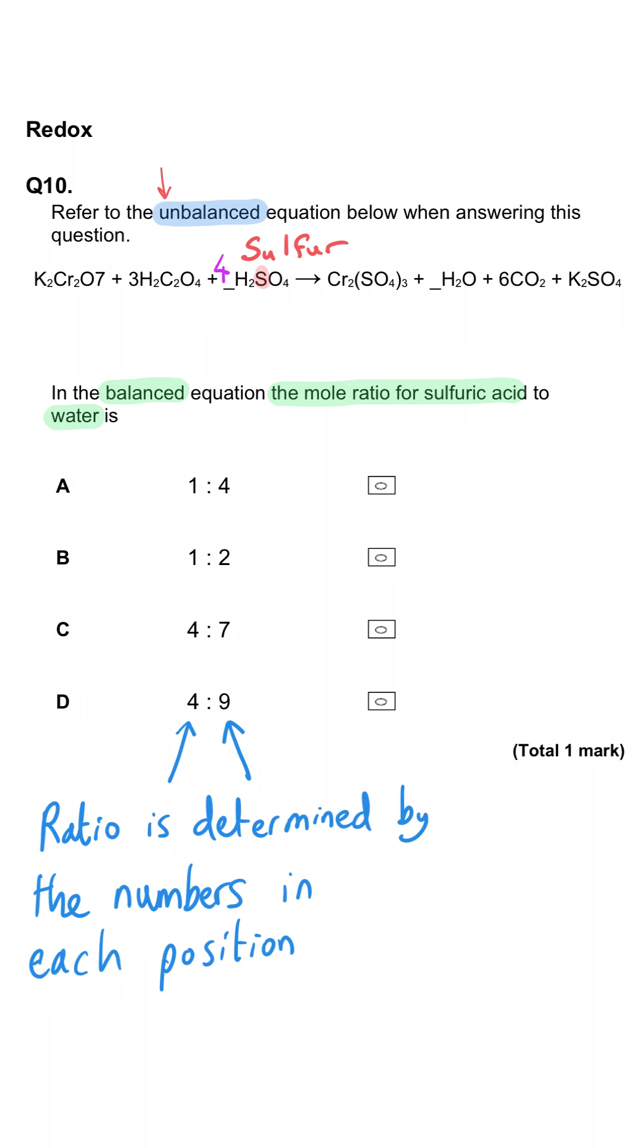That will then give us four times two, so eight hydrogens in the H₂SO₄, six here, so that makes 14 in total. So we need to put a seven here, and the correct ratio is four to seven.